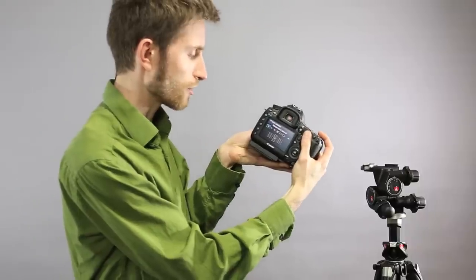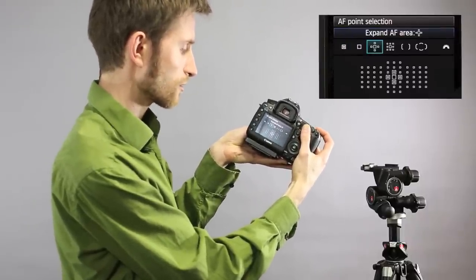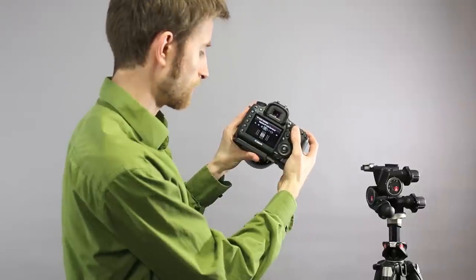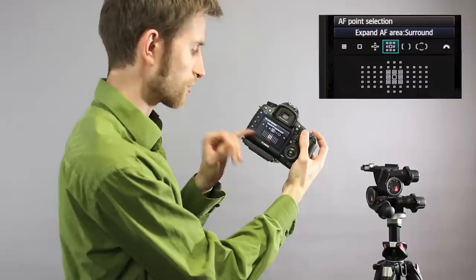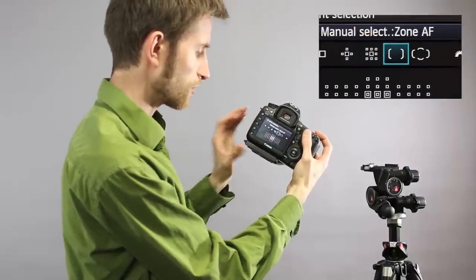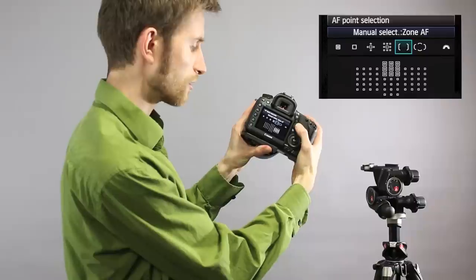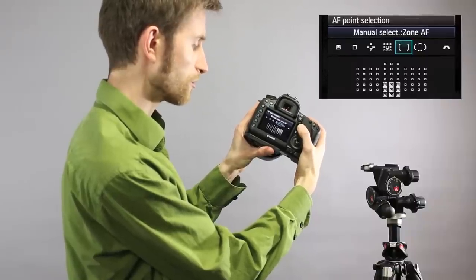You can go from Manual Select Spot to One Point to Area. If you continue on, the grid gets larger and it surrounds the spot here. This one is filled in, and notice when you move it around, it shows you which autofocus points will be used.